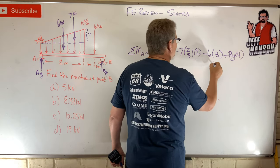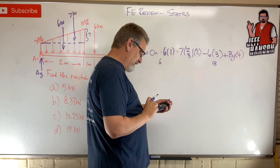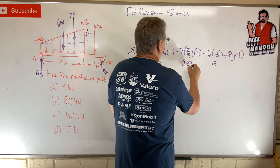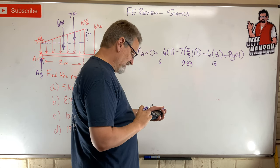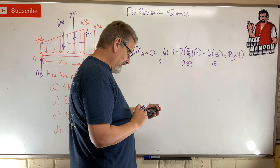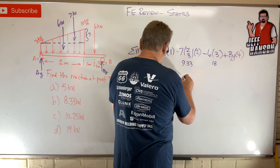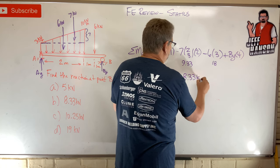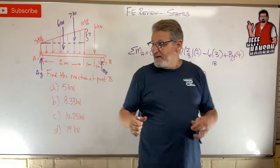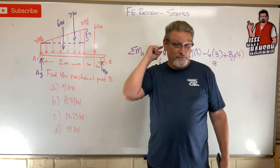So that's 6, plus 18, plus 28/3 which is 9.33 — so 9.33 plus 6 plus 18 equals 33.33, divided by 4 gives By equals 8.33 kilonewtons. And there it is — answer B! Hope that helps, let's do another one.